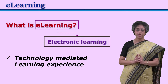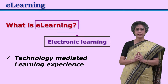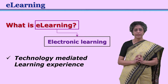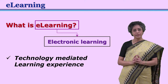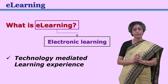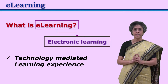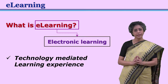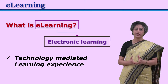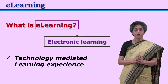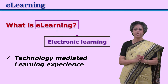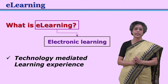E-learning has two parts: e and learning. This e represents electronic. You always use terms such as email, e-commerce, e-media. So the similar term is e-learning — electronic learning. The term electronic is essentially a technological term. So e-learning can be said as technology-mediated learning experience.